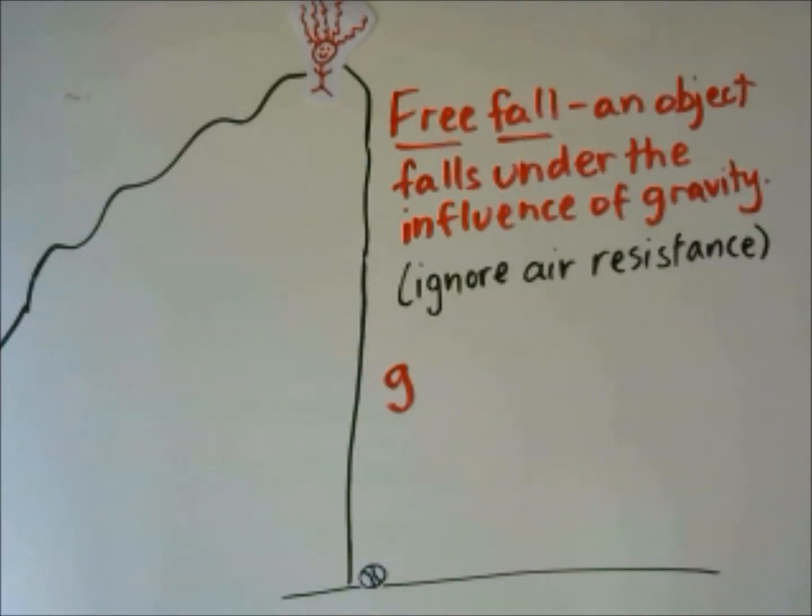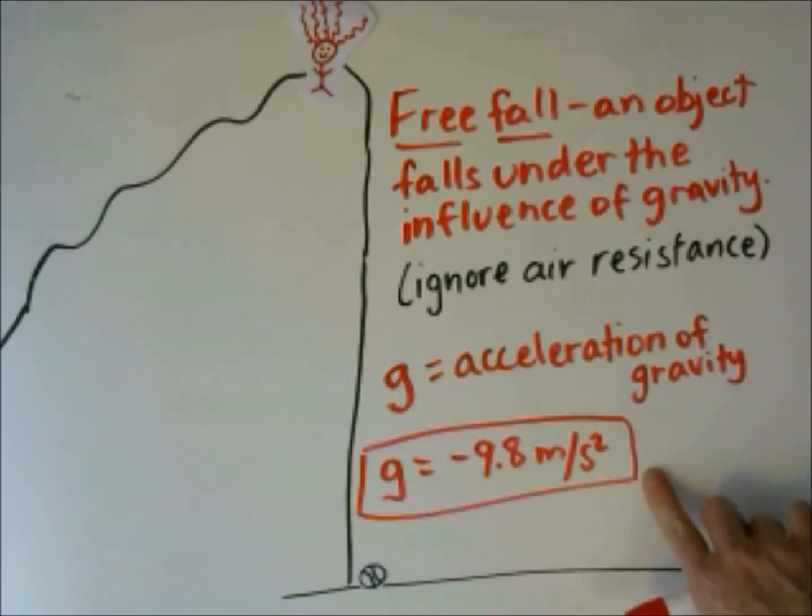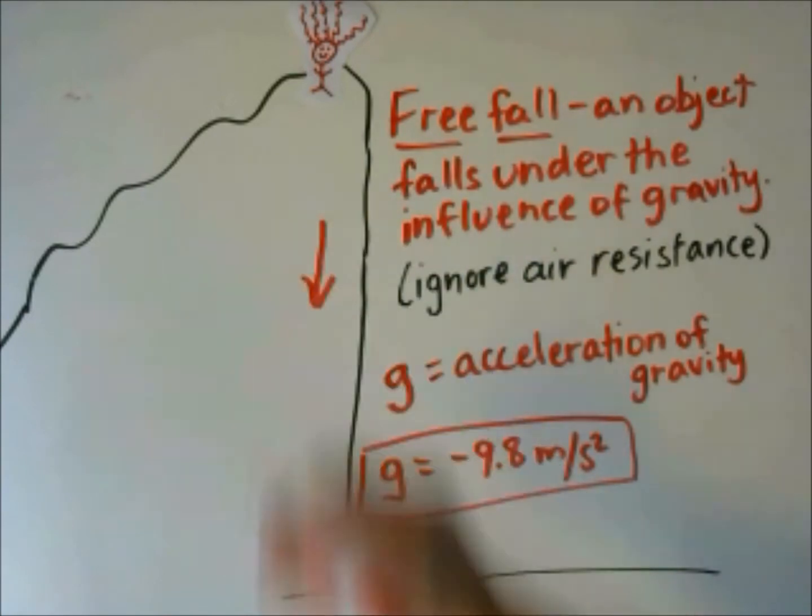At sea level, g is the variable we use to represent the acceleration from gravity. At sea level, g is a constant, negative 9.8 meters per second squared. It is negative because it causes objects to move downward in the negative direction.